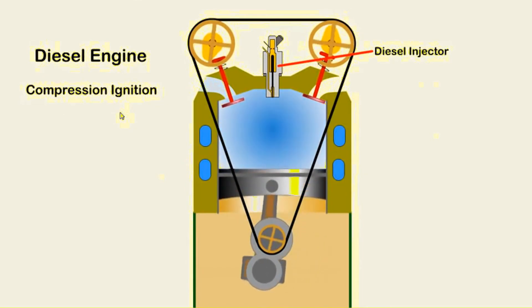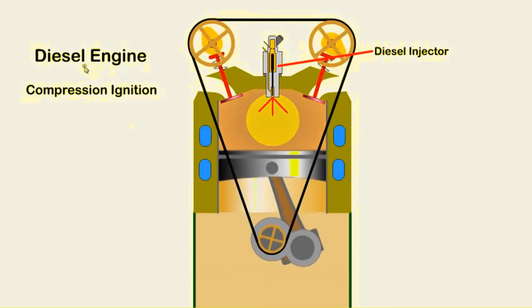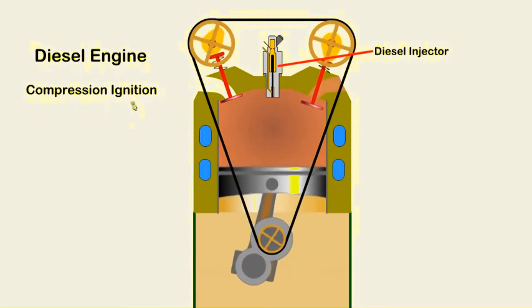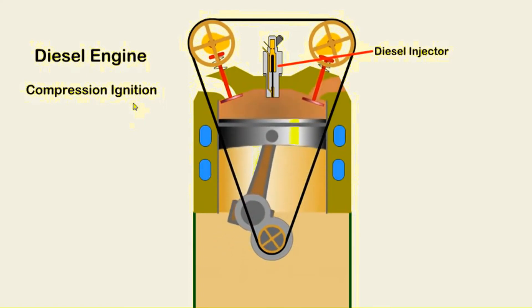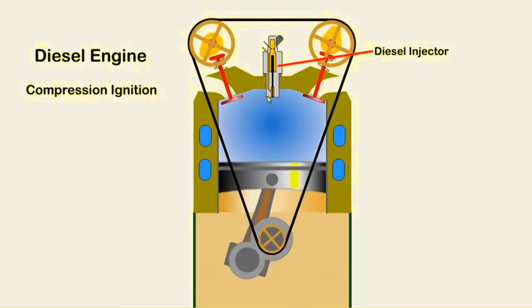So far we have dealt with SI or spark ignition engines. A diesel engine is called CI or compression ignition engines as they rely on the high pressure charge to self-ignite and don't need a spark plug.